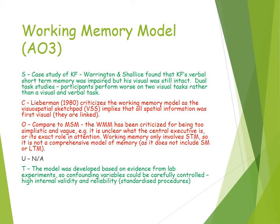For evaluation, there is supporting evidence from the case study of KF. KF had a motorcycle accident and his verbal short-term memory was impaired, but his visual short-term memory was still intact, suggesting that short-term memory is made up of different stores with a verbal element and a visual element. Dual task studies by Baddeley and Hitch also found that participants perform worse on two visual tasks rather than a visual and a verbal task, suggesting there are separate stores each with limited capacity.